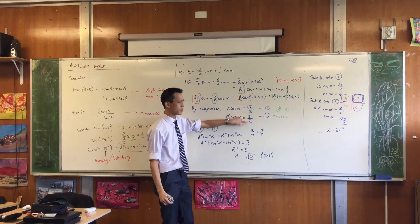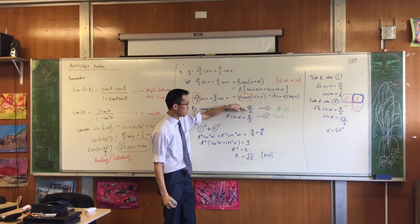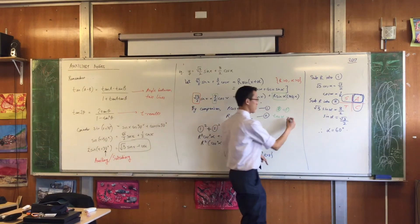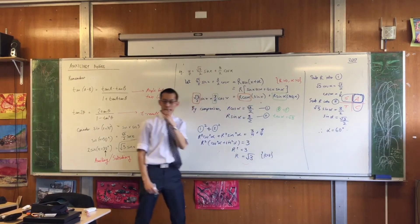The twos will cancel, right? We divide two by two, and then you get three divided by root three, which by definition is root three, right?